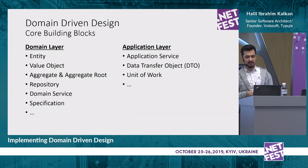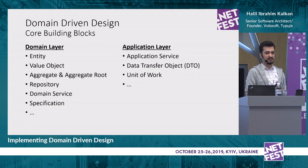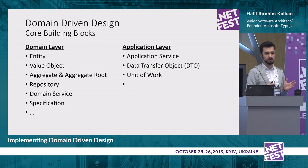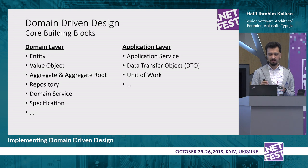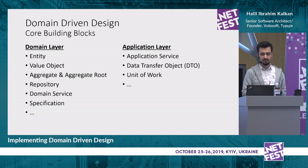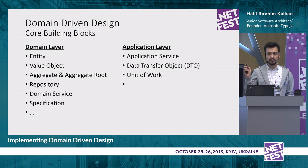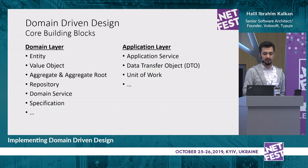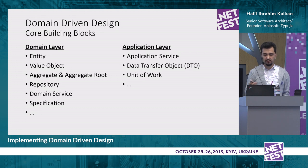In the application layer, we have application services — classes whose methods correspond to use cases of the system, generally user interactions. Application services get and return data transfer objects, not entities. A method of an application service is considered a unit of work, meaning it should be transactional and atomic.